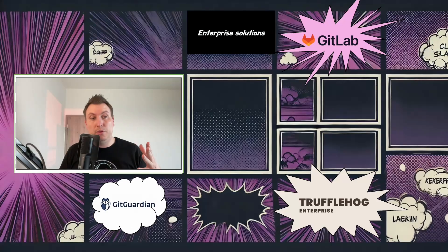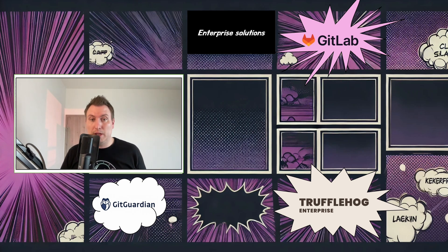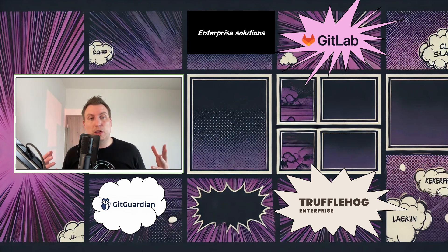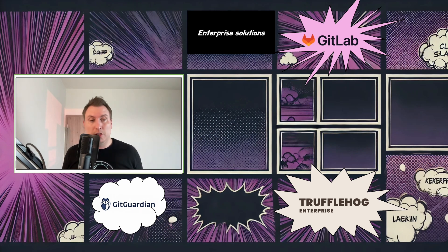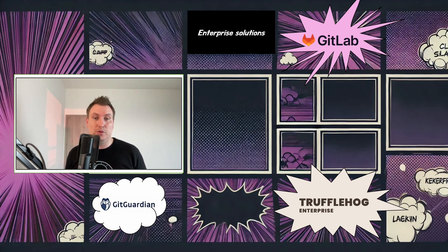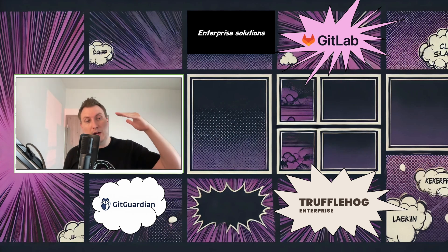If you are looking for an enterprise-grade solution, I can recommend GitLab Ultimate. You can also use TruffleHog Enterprise, which is also my favorite tool for scanning secrets. Or if you're looking for something really fancy, you can use GitGuardian, which helps you identify secrets in your code at the enterprise level. It can do aggregation and tell you more — it's a very interesting platform and a really good choice if you need more than just a CLI tool.